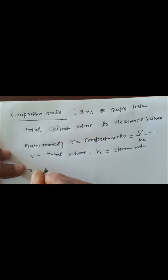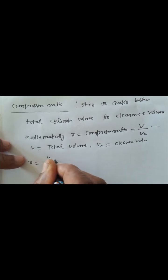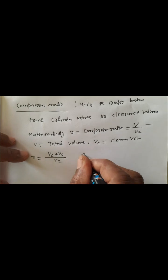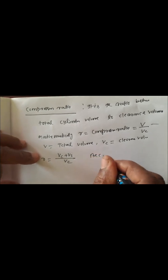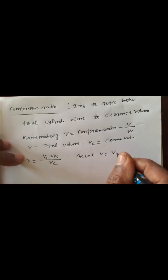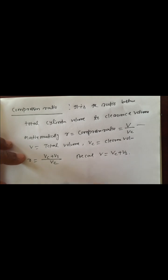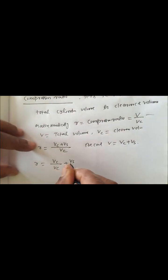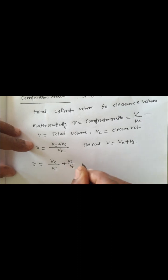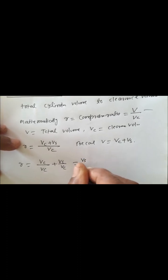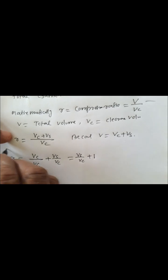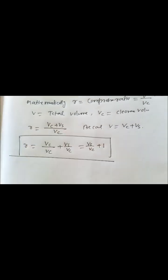That means R is equal to (Vc plus Vs) by Vc, because V is equal to Vc plus Vs. Therefore, R is equal to Vc/Vc plus Vs/Vc, which means Vs/Vc plus 1. This is the compression ratio.